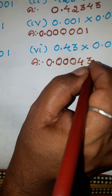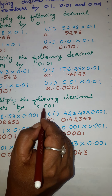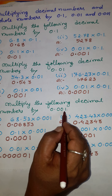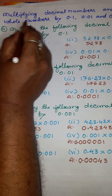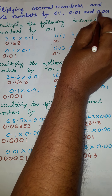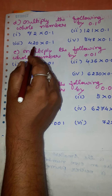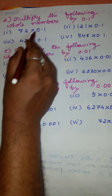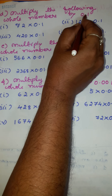Hitherto you have learned how to multiply decimal numbers by 0.1, 0.01, and 0.001. Now let us learn how to multiply whole numbers by 0.1, 0.01, and 0.001. Here we are multiplying numbers by 0.1.